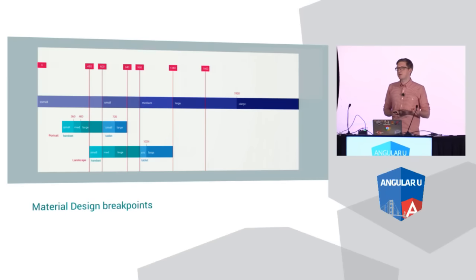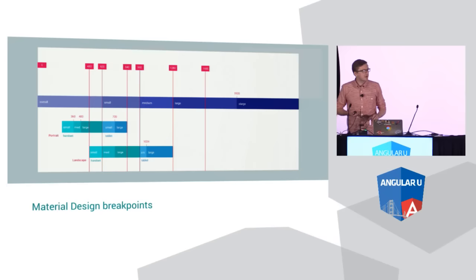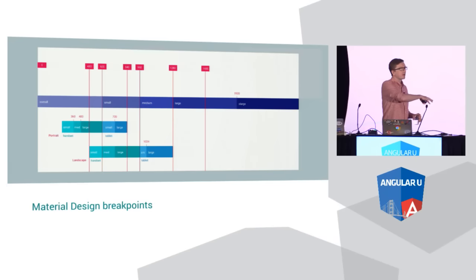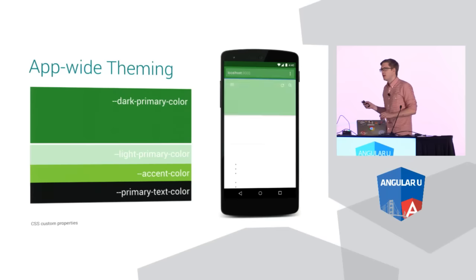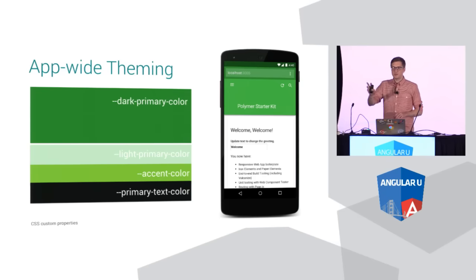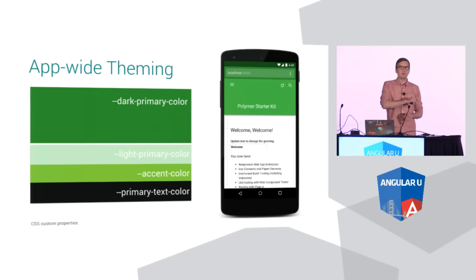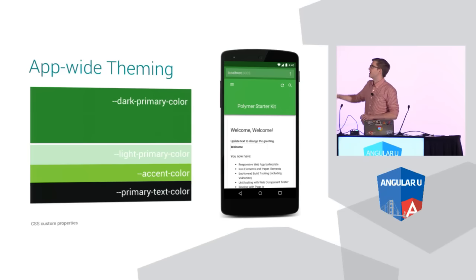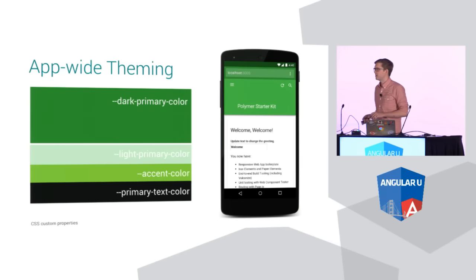Starter Kit makes this very easy by including all the breakpoints in a simple theme file. The other thing I showed earlier was working with custom properties to theme a single element — Starter Kit dials that up to 11. We've got full support for custom properties in all of the layouts. All of Polymer's paper material design elements also use these same custom properties, so if you change these values, not only is the layout going to change, but any material design elements in that application will also update to match these colors.